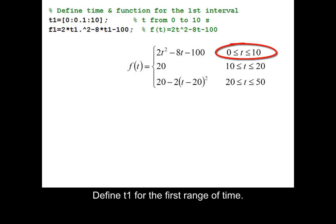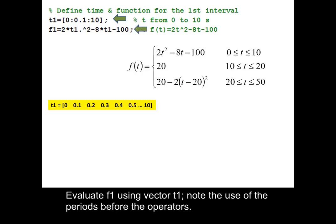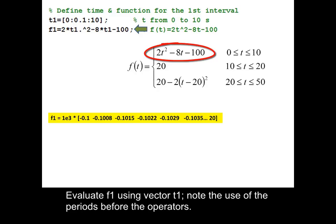Define T1 for the first range of time. Use an appropriate increment of 0.1 seconds for reasonable accuracy in a smooth graph. Evaluate F1 using vector T1. Note the use of the periods before the operators.